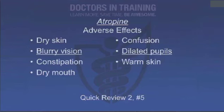Side effects of atropine (anticholinergic toxidrome): dry skin, blurry vision, constipation, dry mouth, confusion, dilated pupils, and warm skin. This is essentially the opposite of organophosphate poisoning — instead of fluids coming out of you, everything dries up. Classic mnemonics: 'mad as a hatter, red as a beet, dry as a bone.'